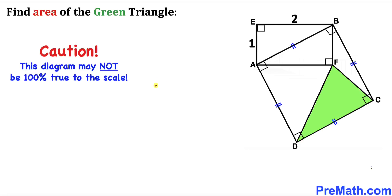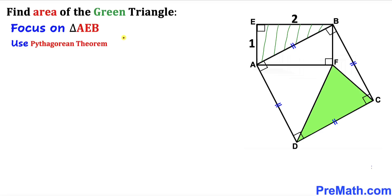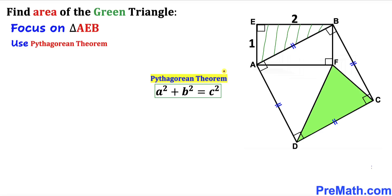Note that this figure may not be 100% true to scale. Let's get started. We'll focus on this right triangle AEB, so we are going to use the Pythagorean theorem: A squared plus B squared equals C squared.